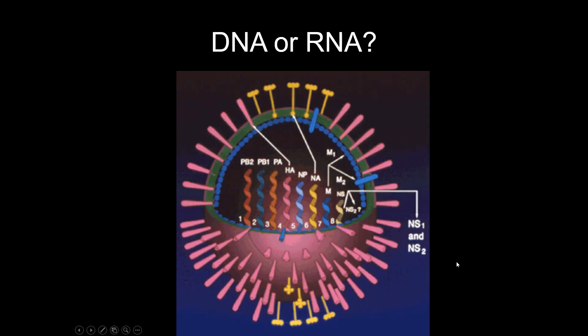Enveloped viruses are easier to kill with disinfectants; naked ones are more resistant. Viruses cannot contain both DNA and RNA — they will either have one or the other. Some are DNA viruses, some are RNA viruses depending on the group. The flu virus, for example, has eight little chromosomes inside of it, so viruses can have multiple chromosomes in some cases.